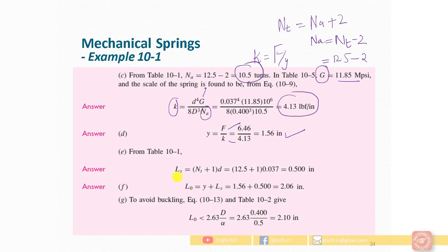Next we find the solid length and free length using formulas from table 10/1. Solid length = (total coils + 1) × wire diameter. Free length = deflection + solid length. The solid length comes out to 0.5 inches and the free length is 2.06 inches.